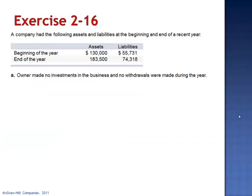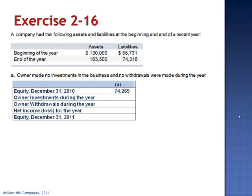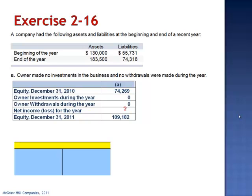So let's look at Company A. The owner made no investments in the business and no withdrawals were made during the year. Beginning equity is $74,269, with no investments and no withdrawals, and at the end of the year the net worth equity is $109,182.